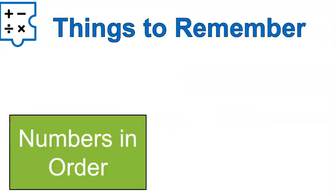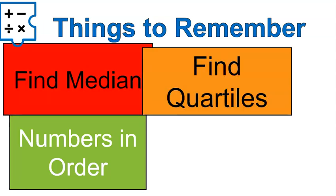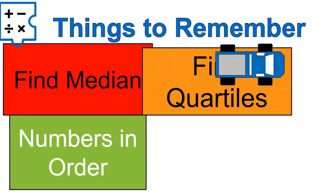A couple things to remember. You always put the numbers in order. That is the number one mistake I see people do. They get caught up in all the other steps and they forget that step and everything falls apart. You need to have the numbers in order. Then you find the median. Calculate the quartiles.